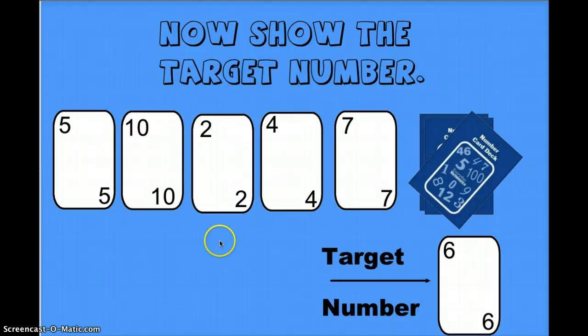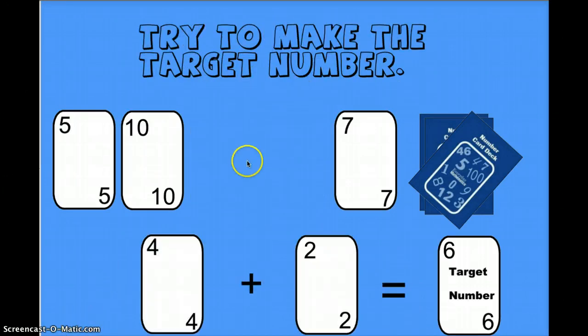Let's give this a try. Your target number is 6. Do you see anything right now that you can use to make a 6? Maybe you saw that you could pull the 4 and the 2. If you add 4 plus 2, that makes 6.